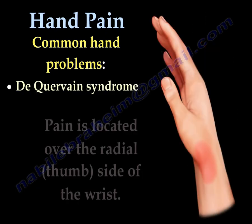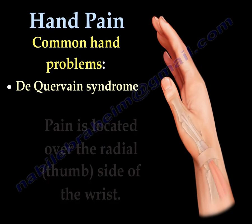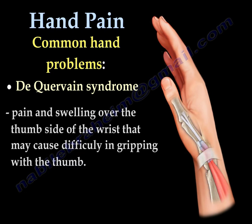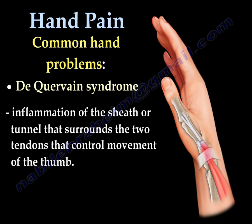De Quervain syndrome causes pain located over the radial side of the wrist and leads to difficulty in grabbing with the hand, specifically with the thumb. It occurs due to inflammation of the sheath or tunnel that surrounds the two tendons that control movement of the thumb.